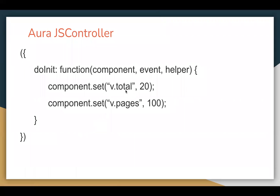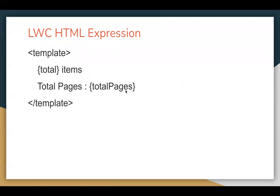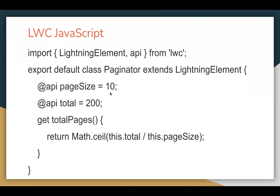If you want to do the same thing in Lightning Web Component: in the HTML file we only have template — no attributes declared there, because variables are treated as properties and declared in the JavaScript file. Here total and totalPages are two properties enclosed directly in curly braces without any exclamation or v. prefix. This is what you need to remember when migrating from Aura to LWC.